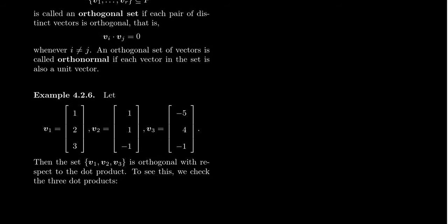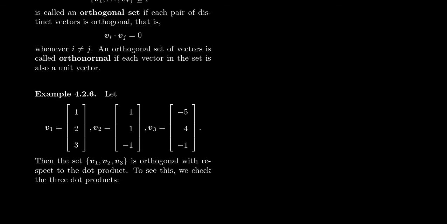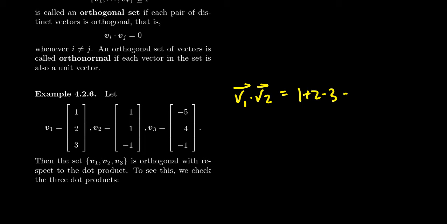For a quick example, let's take three vectors v1, v2, and v3. I claim that the set {v1, v2, v3} is an orthogonal set, and we can see that by some quick calculations. When you take v1 dot v2, you get 1 plus 2 minus 3, which equals zero. So that's an orthogonal pair.